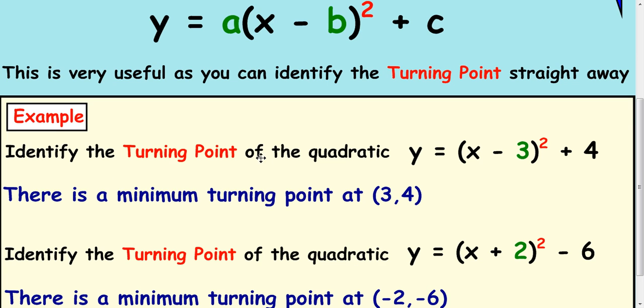So a few examples here. Identify the turning point of the quadratic. Well the x value of the turning point comes from making the bracket 0. So that's 3 and the 4. And this moves the quadratic up 4 places. So it's (3, 4).